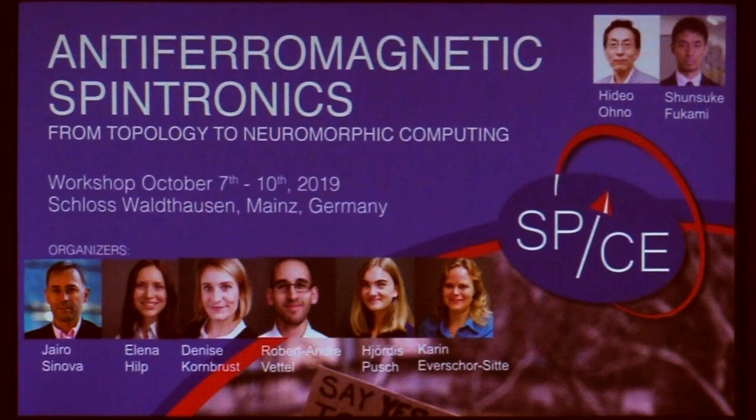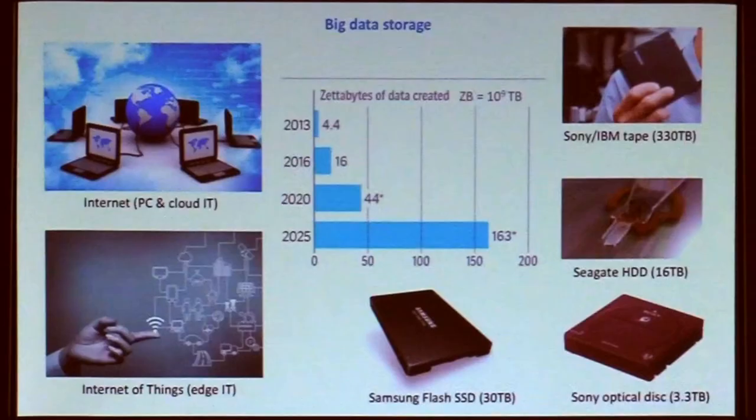I'll start from an IT information technology context — the neuromorphic context — and then at the end get to some really elementary remarks on symmetry and topology and their relationship to antiferromagnets.